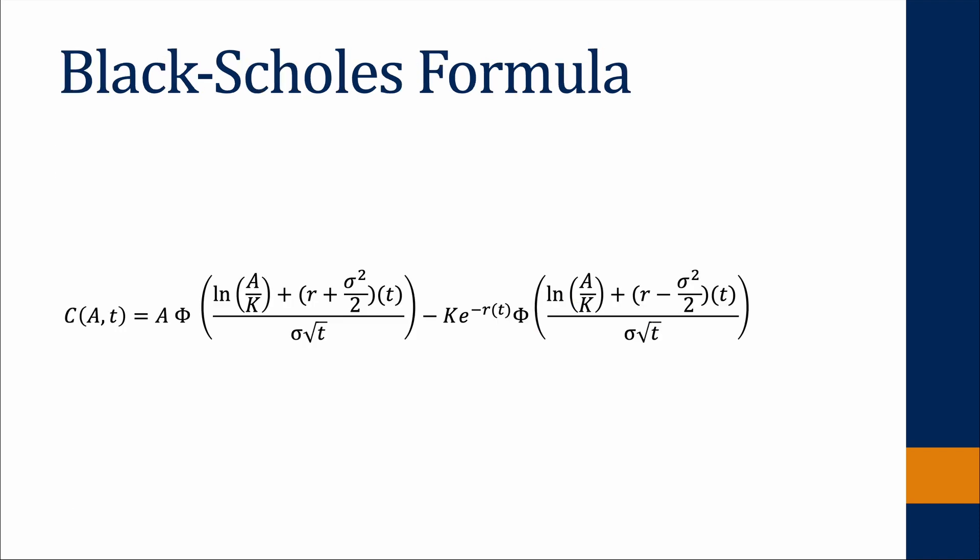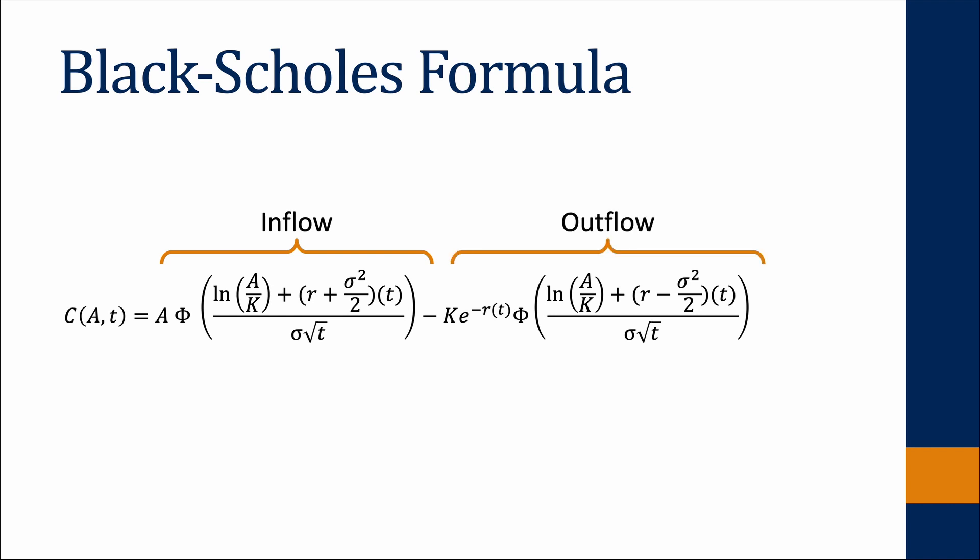This is the Black-Scholes formula. It consists of two parts. The first part represents the inflow a buyer of an option receives, which is the potential receipt of the stock. The second part represents the outflow of the option, so the potential payment of the strike price.